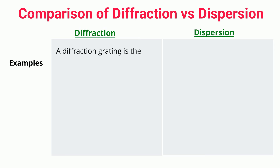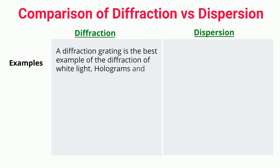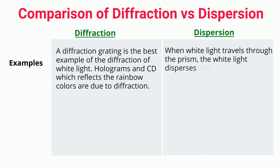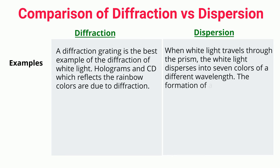Examples: A diffraction grating is the best example of diffraction of white light. Holograms in CDs reflect rainbow colors due to diffraction. When white light travels through a prism, it disperses into seven colors of different wavelengths. The formation of a rainbow is also an example of dispersion.